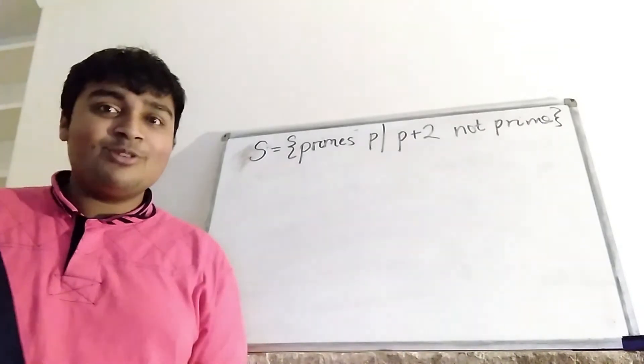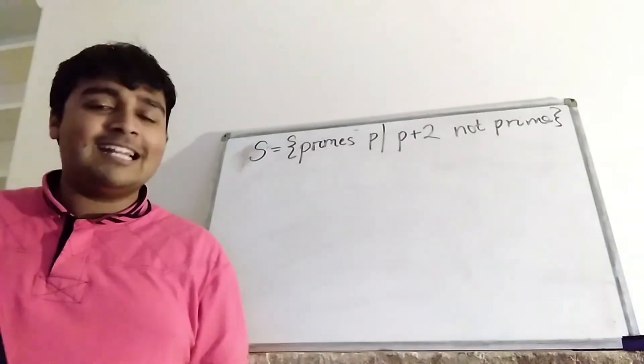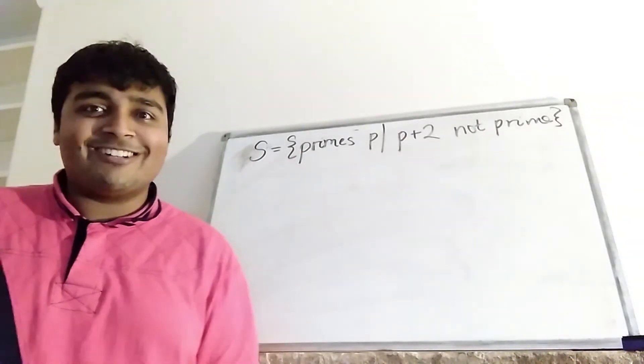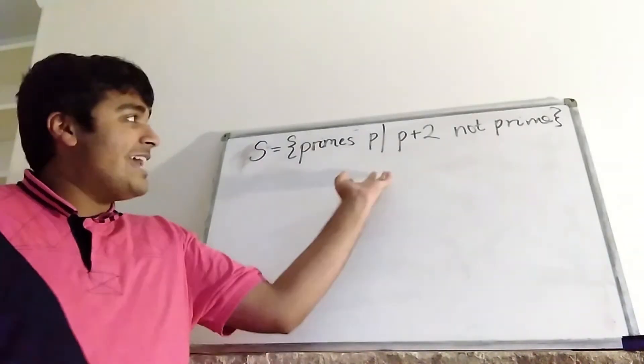Okay, and to prove that, we're going to suppose for contradiction this doesn't have infinite cardinality, and thus has finite cardinality. Okay, so there are finitely many elements in this set here.